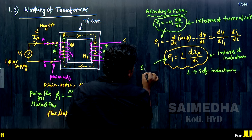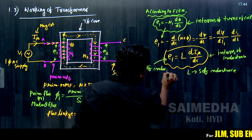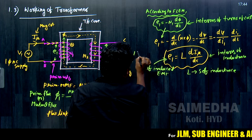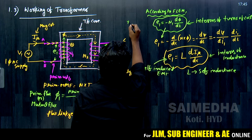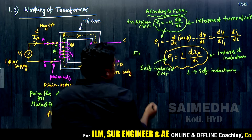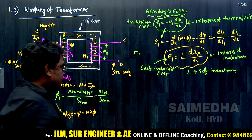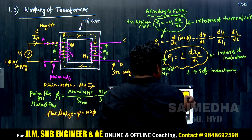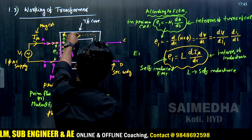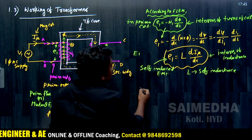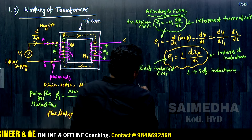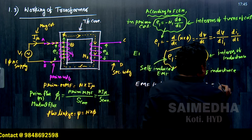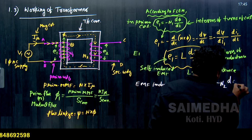The EMF induced in the primary coil is called the self-induced EMF, because it is the EMF induced in a coil due to its own winding. For the secondary winding, the same flux that links the primary coil also links the secondary coil. Therefore, EMF induced in the secondary winding is: E2 = −N2 · dφ/dt.